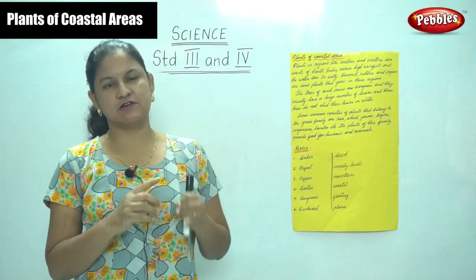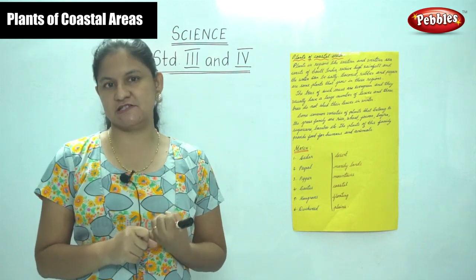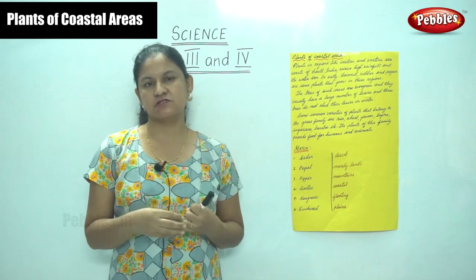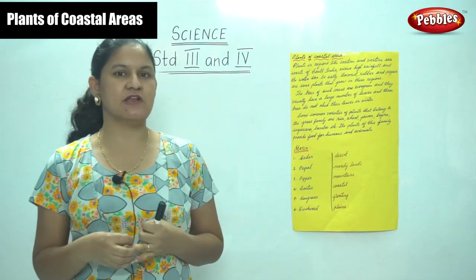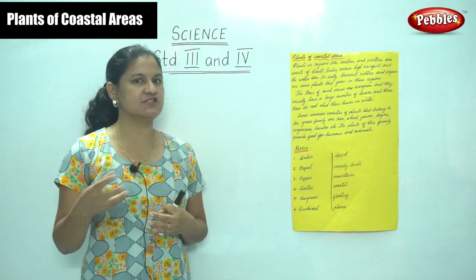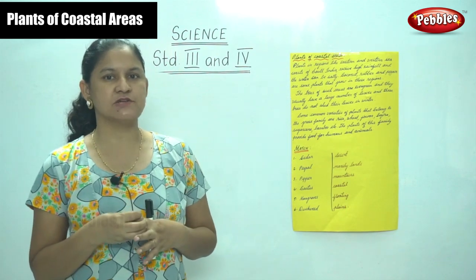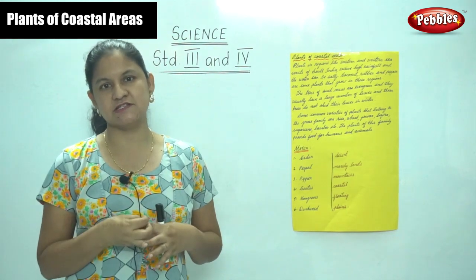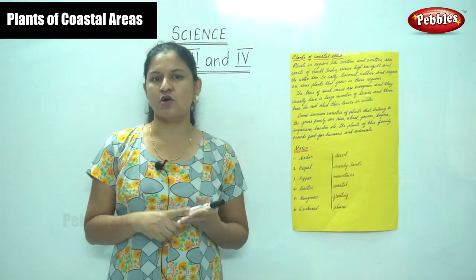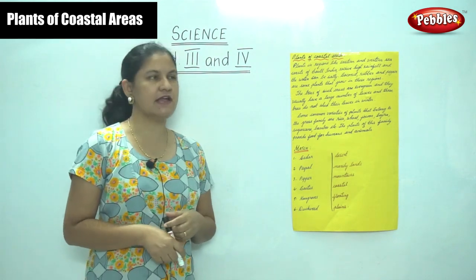We have seen trees and plants that grow in plains, also known as deciduous trees, and trees that grow in mountains or hilly areas, also known as coniferous trees. Then plants that grow in the desert, which is your cactus, and plants that grow in swampy or marshy places, which are your mangrove trees. These have roots that grow above the ground, known as aerial or breathing roots. Now we move on to plants that grow in coastal areas.